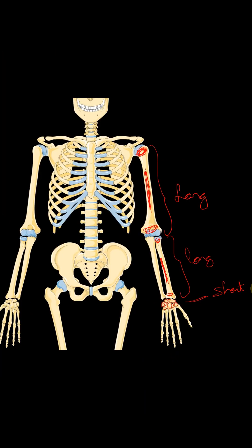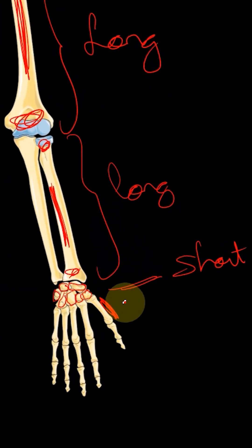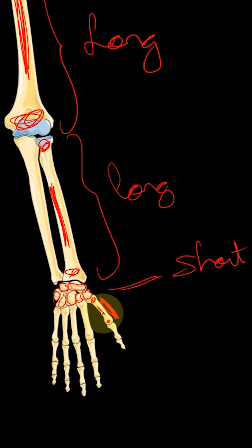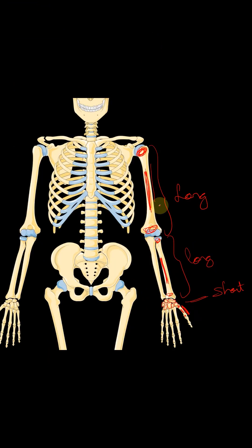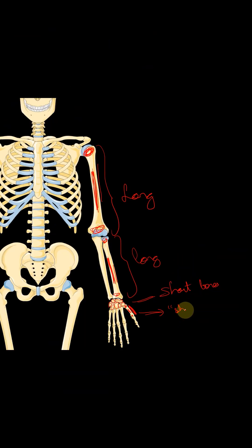The next type of bone is called short long bones. You can see that this metacarpal bone is actually having an upper end, a lower end, and a shaft, but it is miniature compared to the humerus or the radius and ulna. These bones are hence called short long bones.